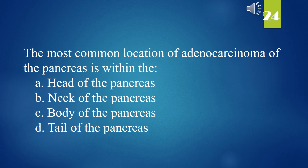The most common location of adenocarcinoma of the pancreas is within the: A. Head of the pancreas. B. Neck of the pancreas. C. Body of the pancreas. D. Tail of the pancreas. The answer is A. Head of the pancreas.